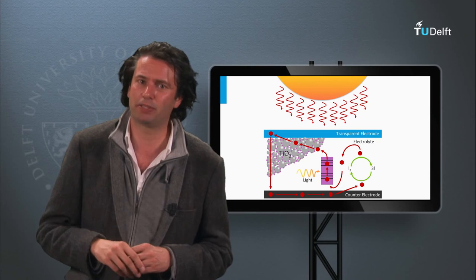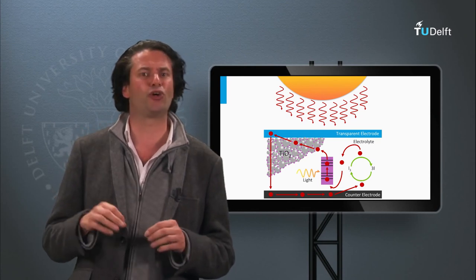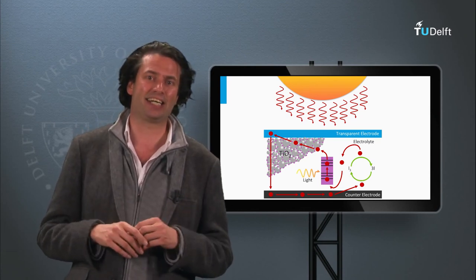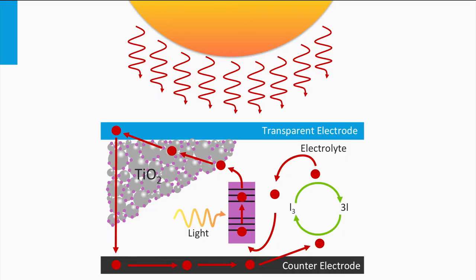An alternative solar cell concept based on organic materials is the so-called dye-sensitized solar cell. It's a photo-electrochemical system. It contains titanium oxide nanoparticles, dye particles, an electrolyte and a platinum contact. In this illustration, the dye-sensitized solar cell is schematically shown.